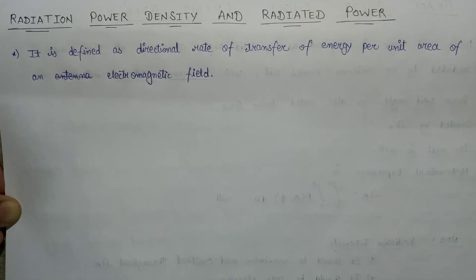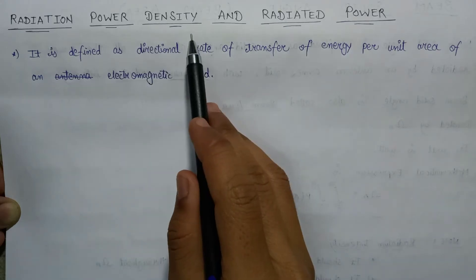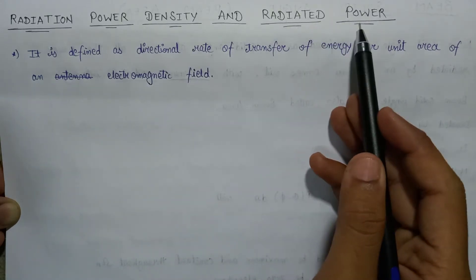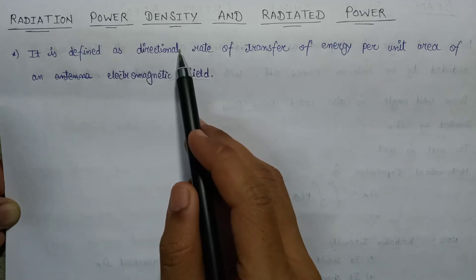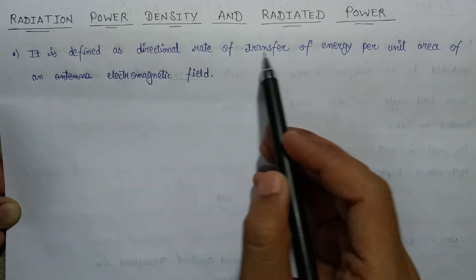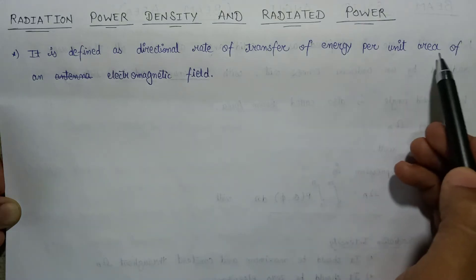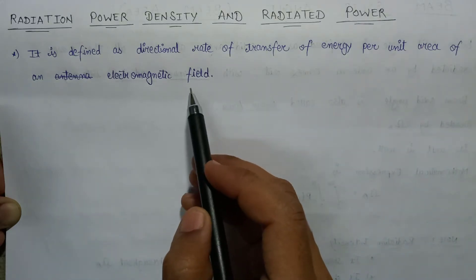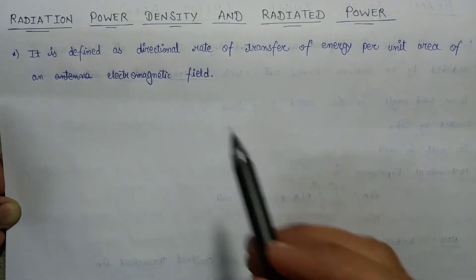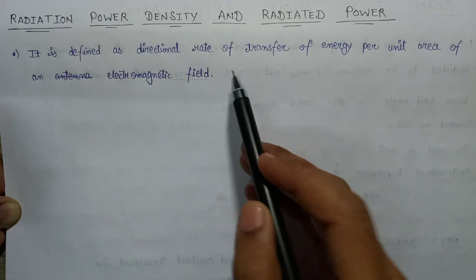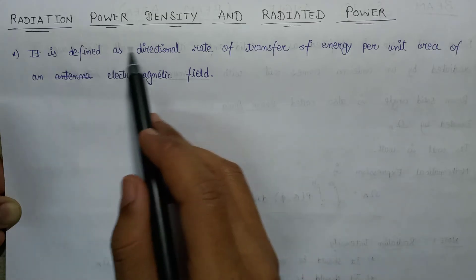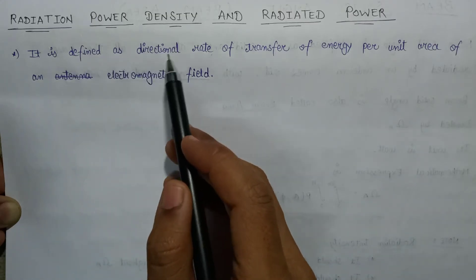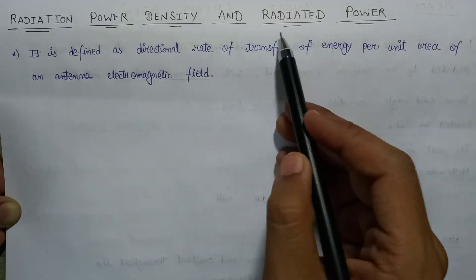Hi everyone. In this lecture we are going to study about radiation power density as well as radiated power by an antenna. The radiation power density of an antenna is defined as a directional rate of transfer of energy per unit area of an electromagnetic field. This is all about the transfer of energy per unit area, and it is the definition of radiation power density.